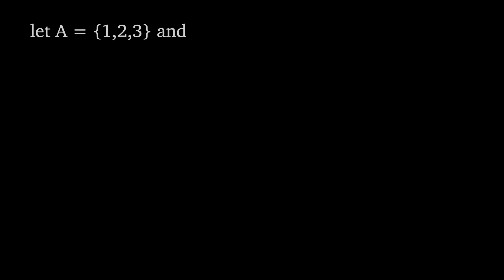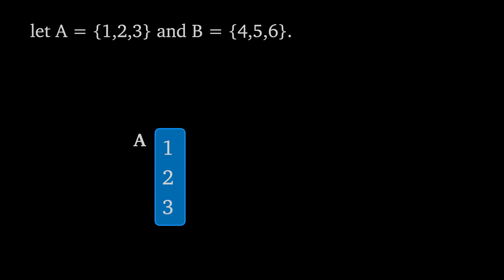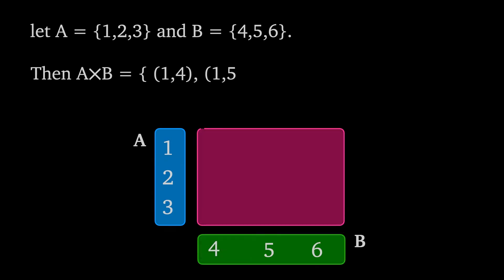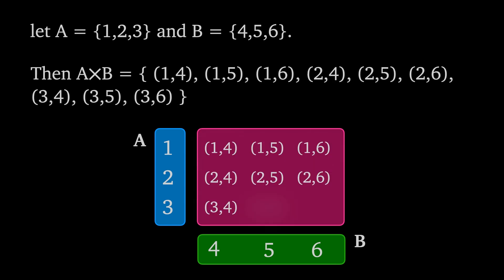For example, let a be the set containing one, two and three, and let b be the set containing four, five and six. Then a cross b is the set containing the ordered pairs (1,4), (1,5), (1,6), (2,4), (2,5), (2,6), and (3,4), (3,5), (3,6).